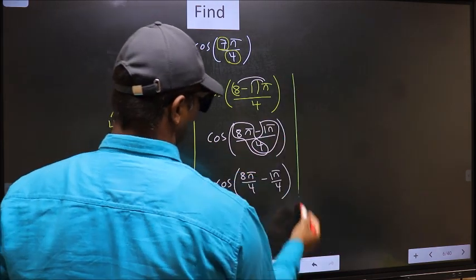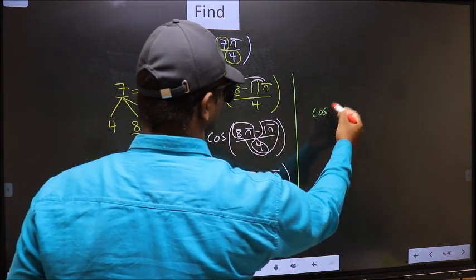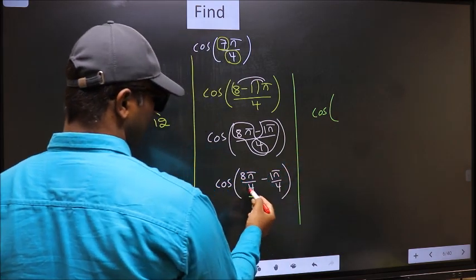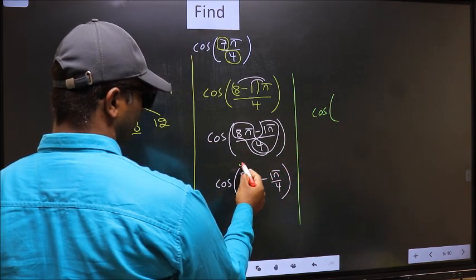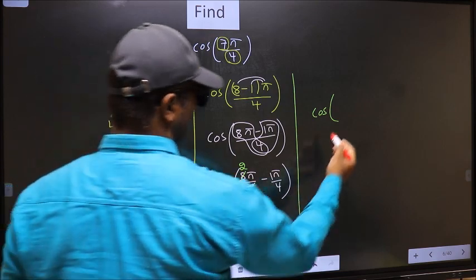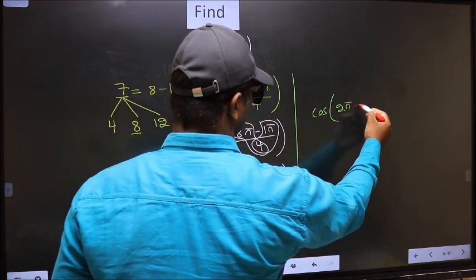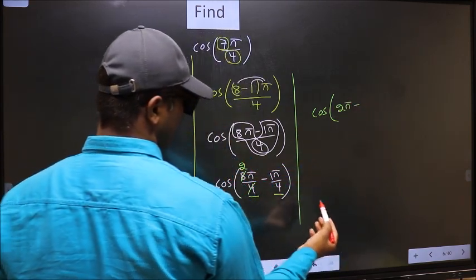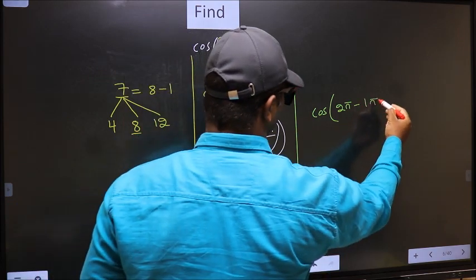Next. Cos. Now here, you should cancel. 4 1s, 4 2s. So we get 2π minus this no change. 1π by 4.